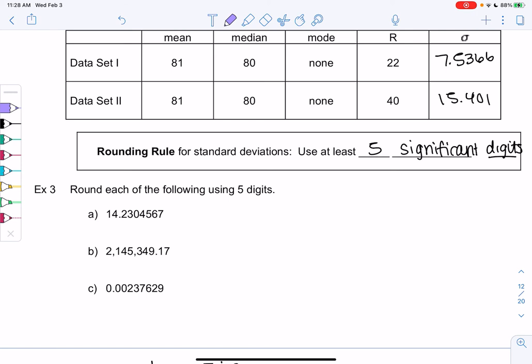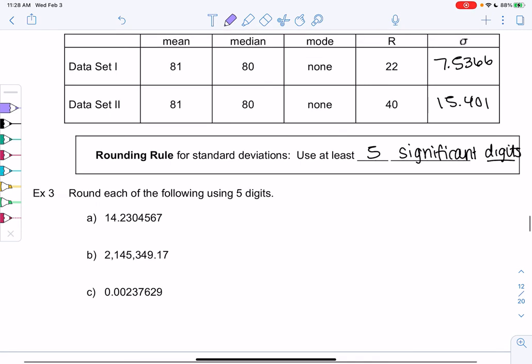So if we look at 14.2304567, we just start counting digits. So we start on the far left. 1, 2, 3, 4, 5. And then we can cut everything off after that. So we count the first 5 digits from the left, and then we just follow rounding rules. So the 4 after the 0 tells me to stay at 0, so we just call this 14.230. And that is using 5 digits. The 0 needs to stay. It's the 5th digit.